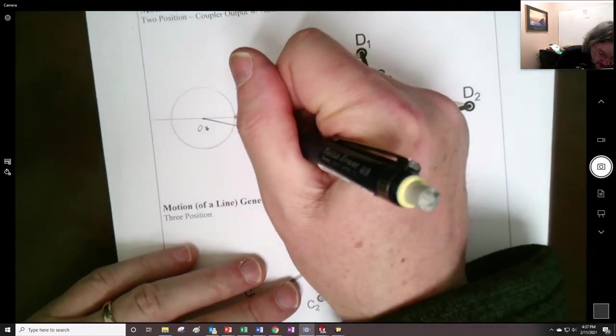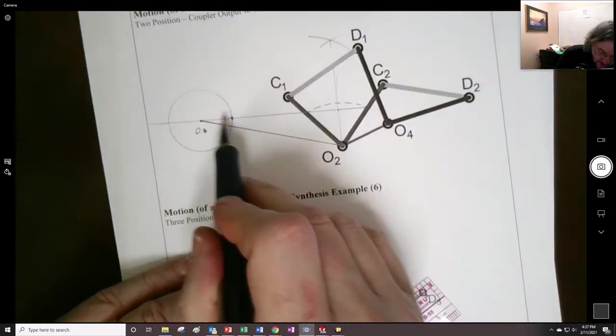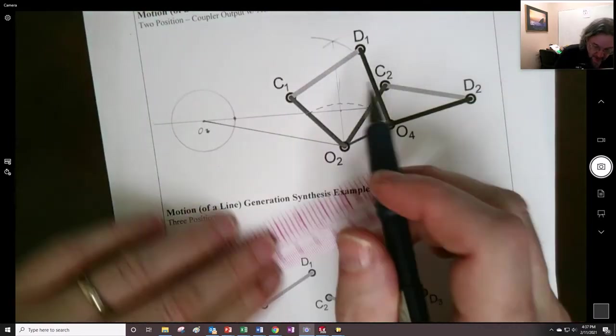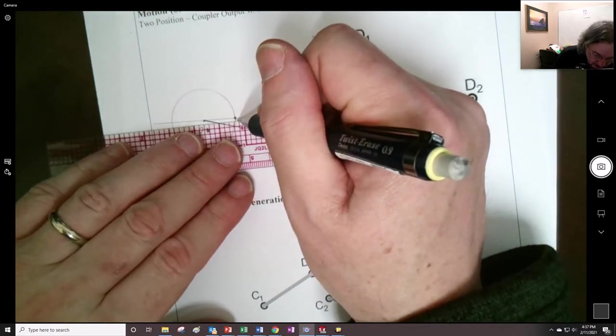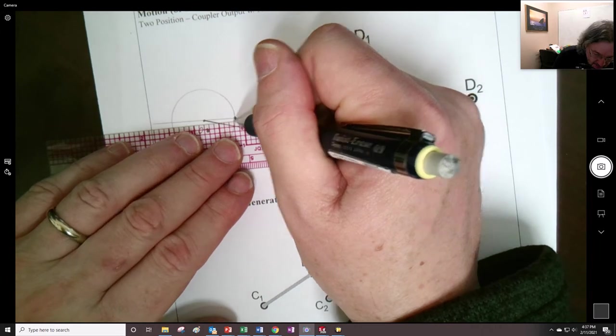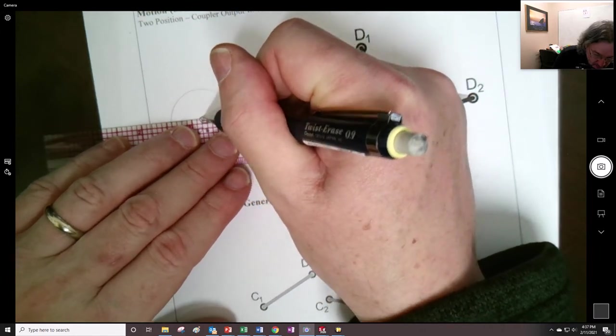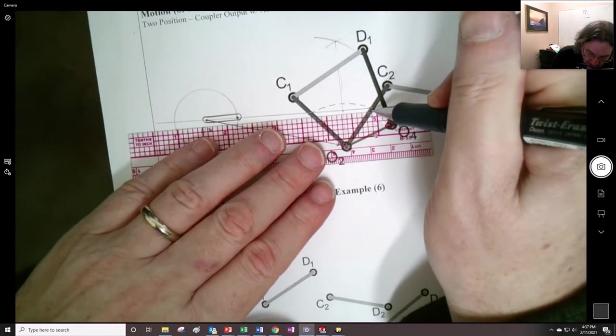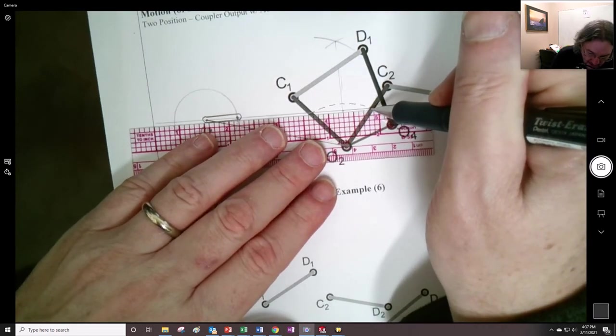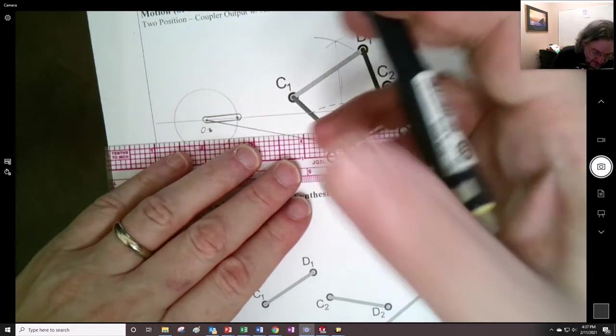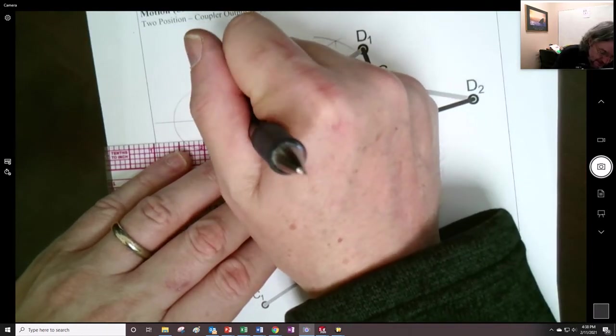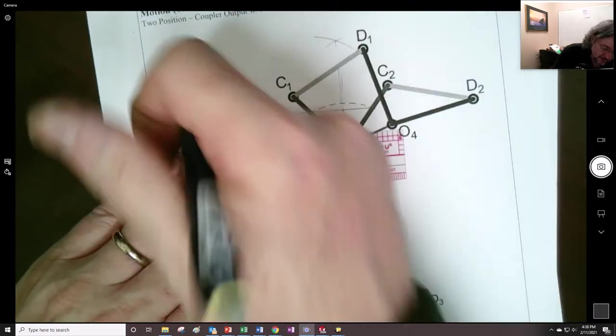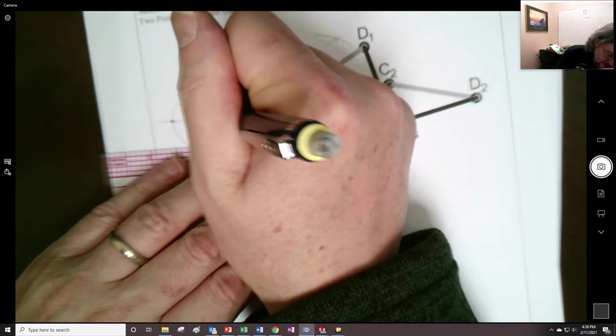So right here is when this new crank, right, this crank for the dyad driver, and that's where it would be. Actually, most of the time I draw that hidden. So let's hide that. Here is where it is when there's an overlap.